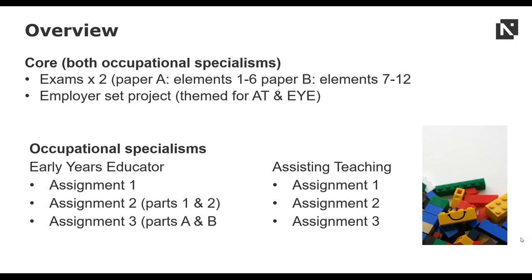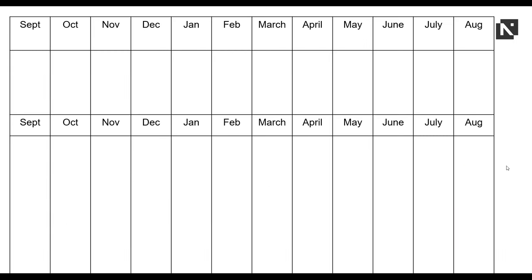The occupational specialisms students also have assessment involved in them. Assignment one is for both early years educator and assisting teaching, and there will be three assignments. The difference that will jump out at you is that in assignment two for the early years, they will have a part one as well as part two, which is aligned to the early years educator competency criteria — the DFE and EYE criteria. For assisting teaching, they will just have their structured observations as part of their second year.